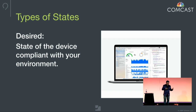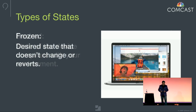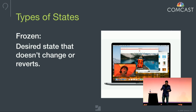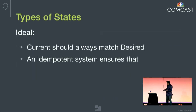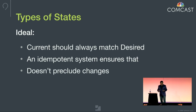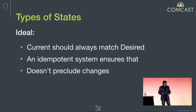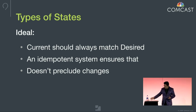Desired state is the state of your device that's compliant with your environment, and for many of us that looks very different. Frozen state is one that doesn't change at all or reverts — a good example is a kiosk or something done with Deep Freeze. The ideal state is what we're all working towards: your current state should always match the desired state of the device. An idempotent system — something that's stateful and doing state management — ensures that, but it doesn't preclude changes.